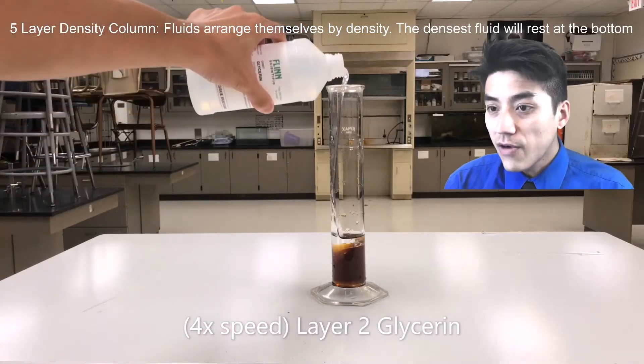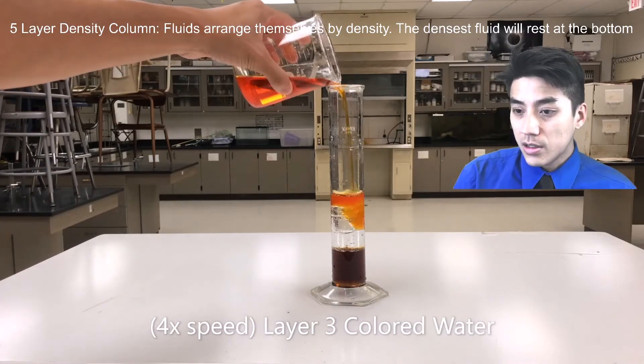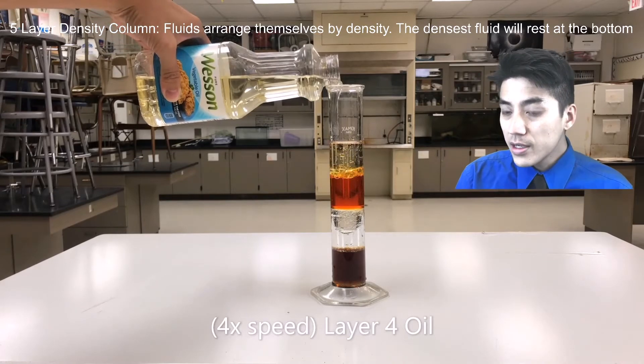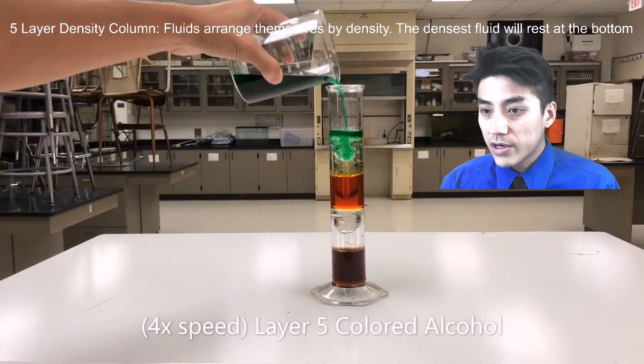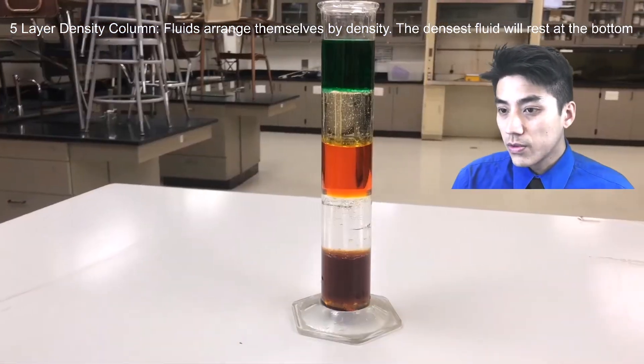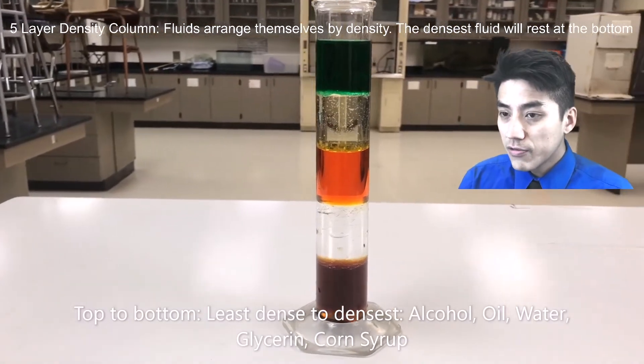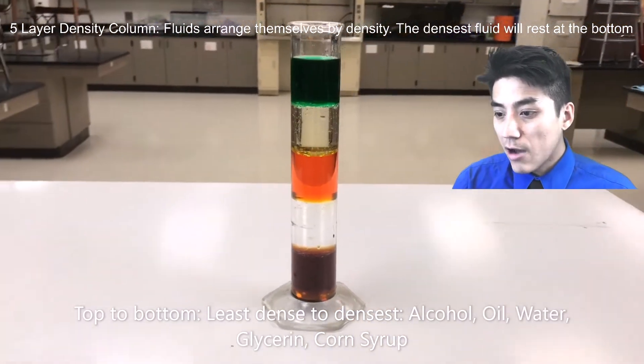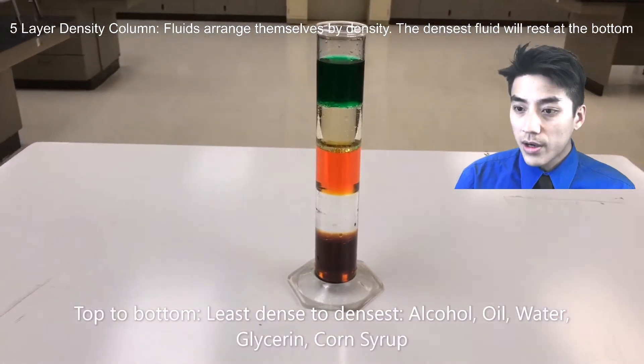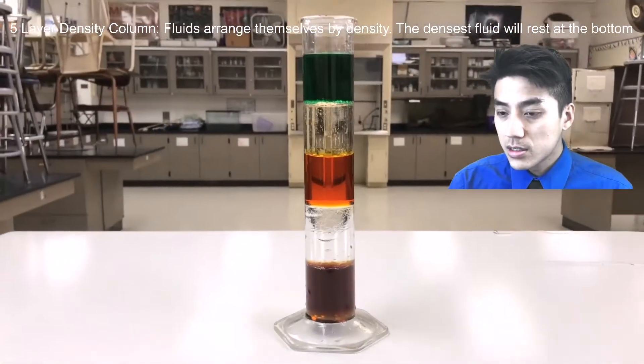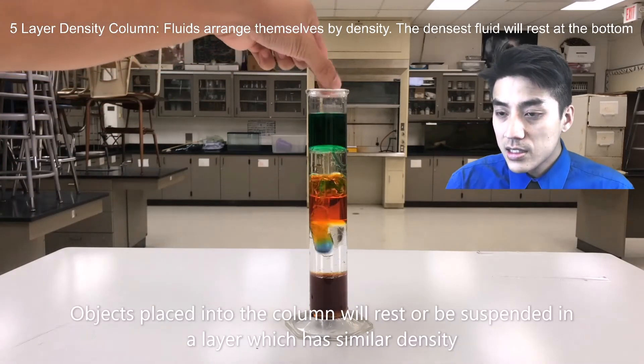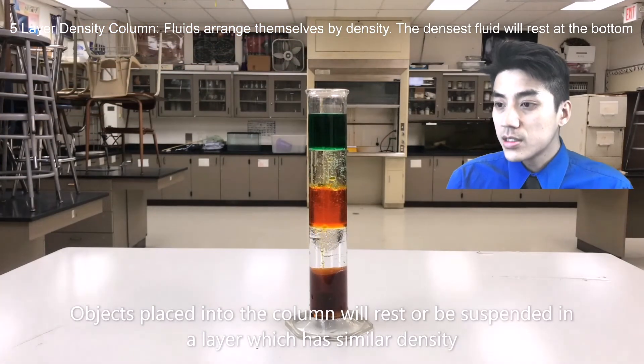I'm making what's called a 5-layer density column. I start with corn syrup, glycerin, water is there in the red, that's oil, and then at the very top, that's alcohol, which I colored with green. I have 5 different layers. From top to bottom, the least dense is alcohol, oil, water, glycerin, and the densest is the corn syrup there at the bottom. You can figure out what the relative densities of these objects are by placing them into the column.